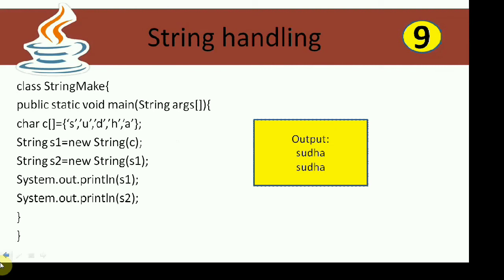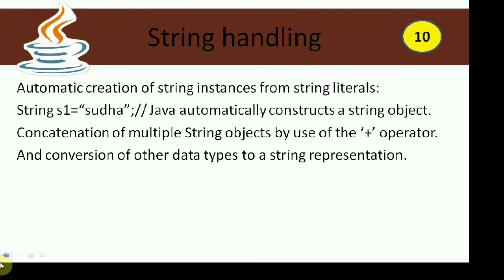Here is a program demonstrating passing a string object into another string constructor. S1 is 'Sudha' and S2 is created by passing S1 as argument to the constructor, so S2 has the same character sequence. Printing S1 and S2 shows both output 'Sudha'. Automatic creation of string instances from string literals — Java provides automatic construction of string objects because there won't be any programs without strings.